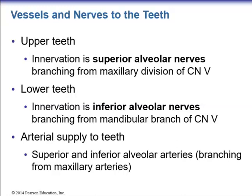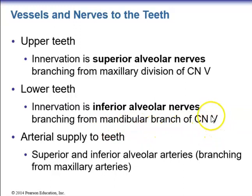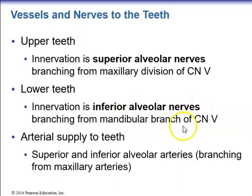For innervation of the teeth: upper teeth are innervated by the superior alveolar nerves, branching from the maxillary division of the trigeminal nerve (cranial nerve 5). Lower teeth are innervated by the inferior alveolar nerves, branching from the mandibular division of the trigeminal nerve. For blood supply, the superior and inferior alveolar arteries are branches of the maxillary artery.